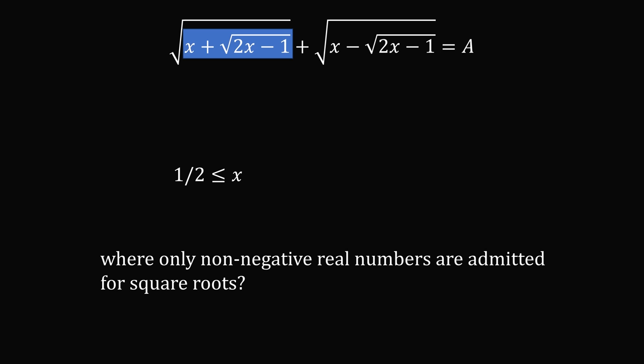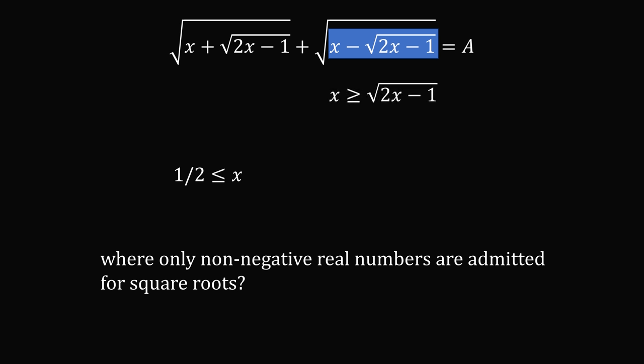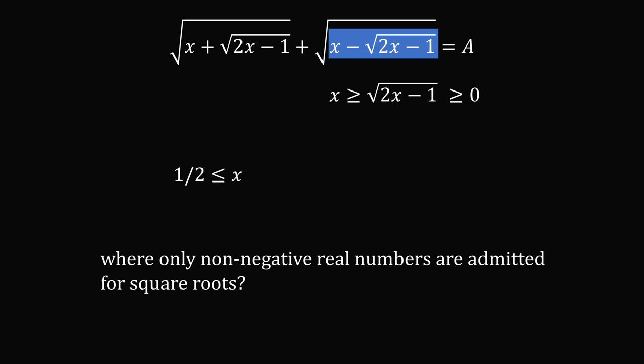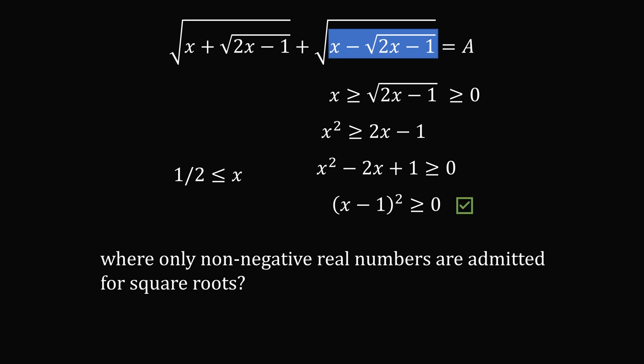Now let's look over here. We have x plus the square root of something. We know that the square root of that thing will be a non-negative number, and we're adding x which is greater than 1 half, so the entire thing is going to be a non-negative number — no problem. What about x minus the square root of 2x minus 1? We need to make sure that x is greater than or equal to the square root of 2x minus 1. Since x is greater than or equal to 1 half, we can safely square both sides: x squared is greater than or equal to 2x minus 1, meaning x squared minus 2x plus 1 is greater than or equal to 0. We can factor this as the square of x minus 1, which is always greater than or equal to 0. So the domain condition is satisfied.